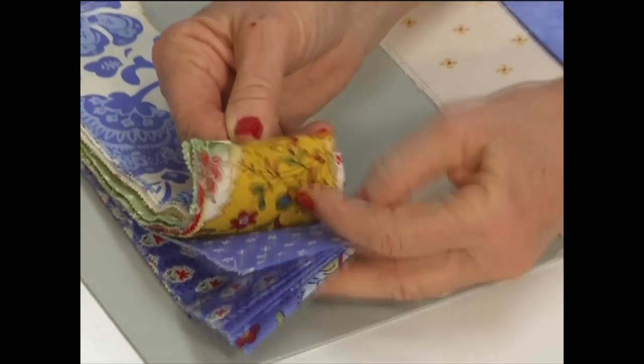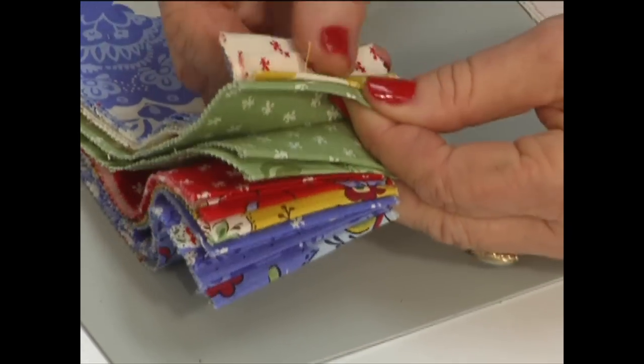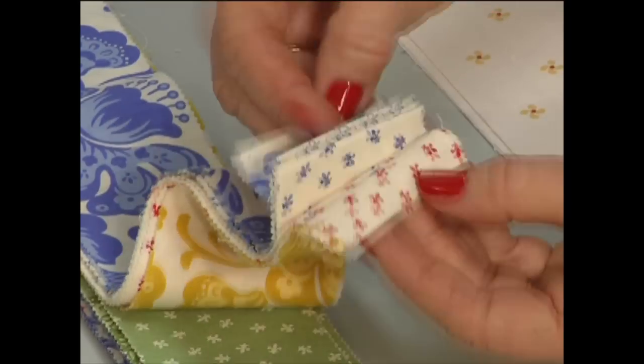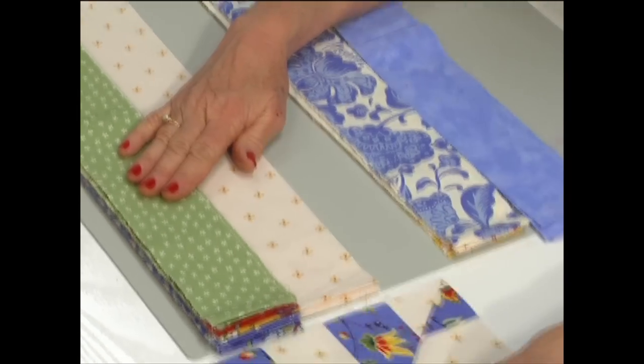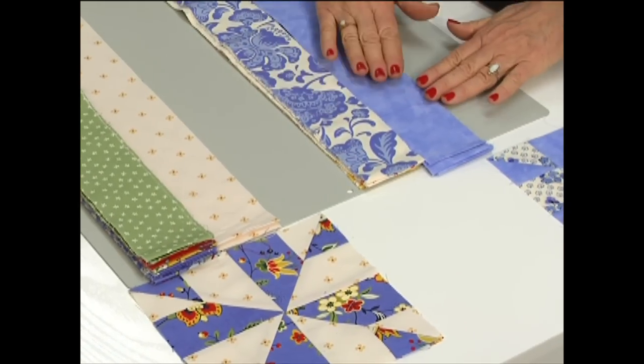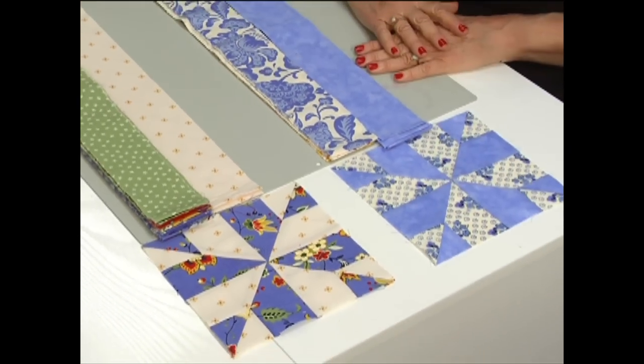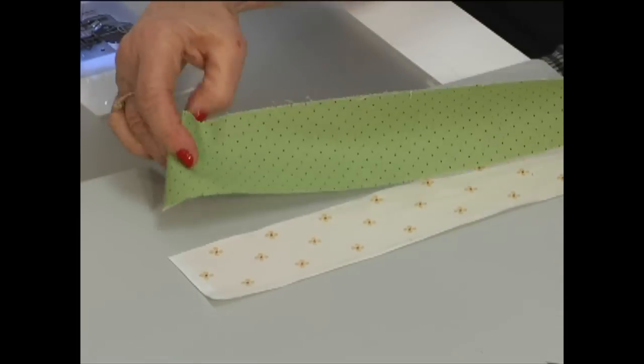Sort your jelly roll into 24 medium and dark and 16 light. Now the whirly gig uses background and springtime uses a medium strip. These are the two blocks you're going to be making for the whirly gig.